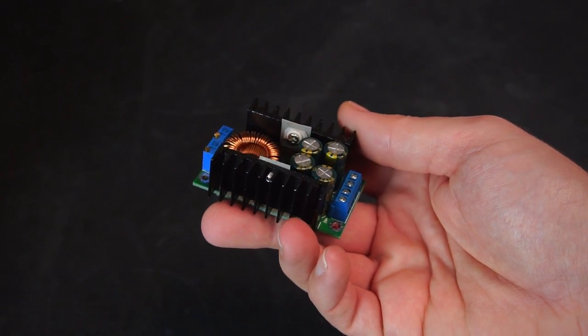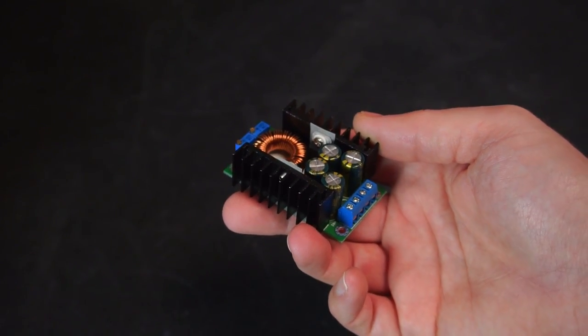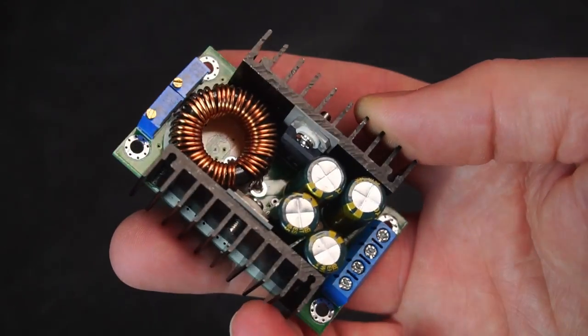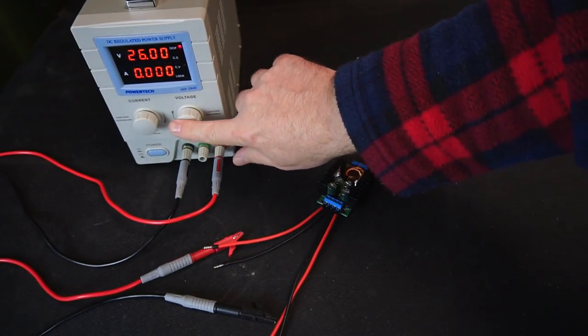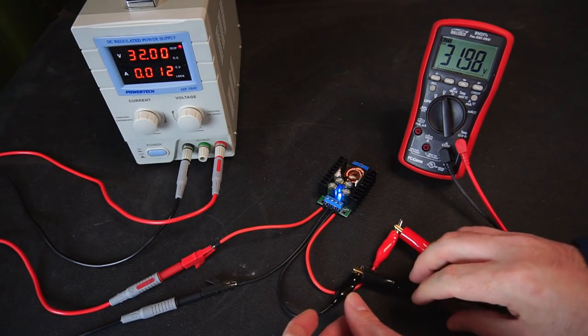In order to appreciate the challenges of designing a buck converter, first we need to understand how a buck converter controls voltage on its output. This is a buck converter I bought online for around $8. I'll power the buck converter from my power supply which is set to 32 volts, and then I'll connect my multimeter to the output of the buck converter.